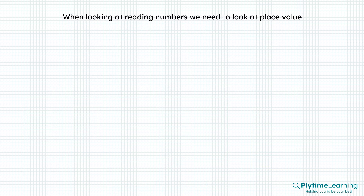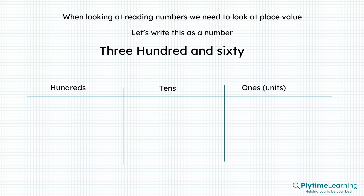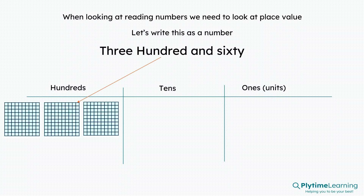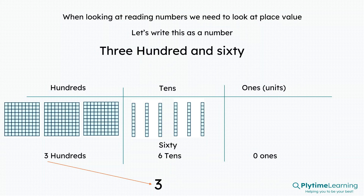When we're looking at reading numbers, we need to look at the place value. Let's write this as a number: three hundred and sixty. If we have our columns, we can see it says 300, so we have 3 in the hundreds column. We have 60, and 60 is 6 tens, so we have 6 in the tens column and 0 in the ones column. So we'd write three hundred and sixty as 360.